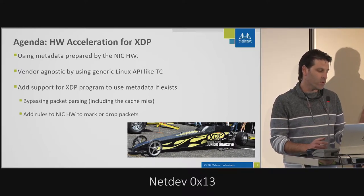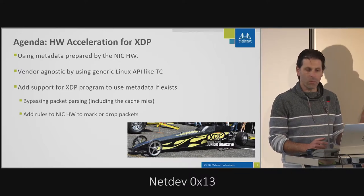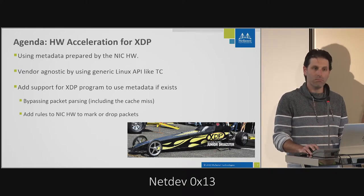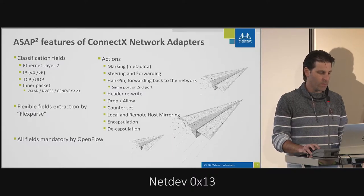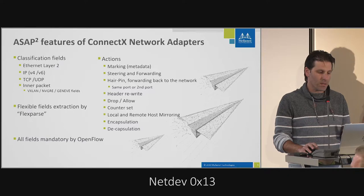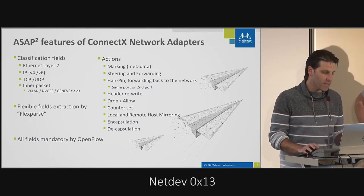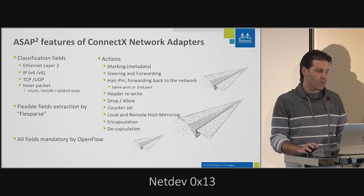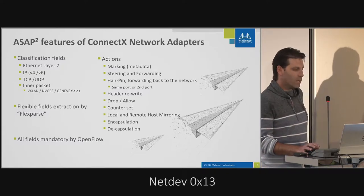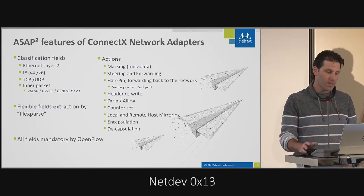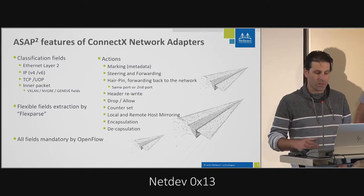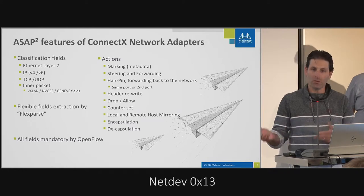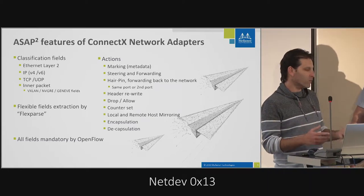For that, we need to add rules to the NIC hardware to either mark the packet or drop it. In ConnectX network adapters, we have acceleration capabilities for classification and actions. The adapter can do classification for L2, L3, L4, encapsulation, NCAP, DCAP, and many more fields via OpenFlow. The actions can be marking, steering to queues, steering to virtual functions, rewriting packets, counters, and so on.